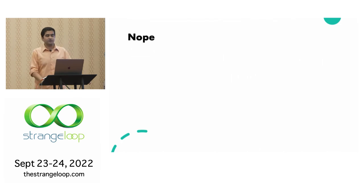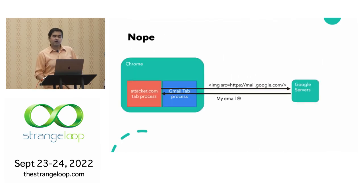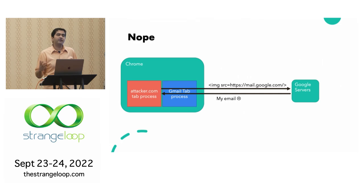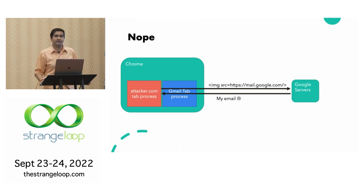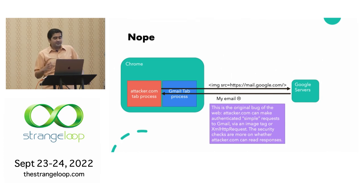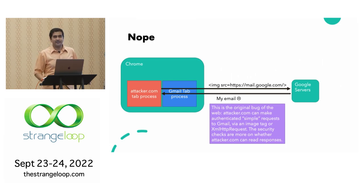Here's the problem where cross-origin requests come up: attacker.com can just say IMG SRC mail.google.com and still fetch email. Even though you've blocked navigation, the hacked renderer can say: I want to fetch Gmail as an image. The browser doesn't know that's not an image — everything is a URI. So the browser says sure, here's Gmail and everything in the body, and the compromised process can just read everything. This is really the core bug of the web: from the very beginning, the web allowed arbitrary third-party requests, and we are still paying for that complexity.